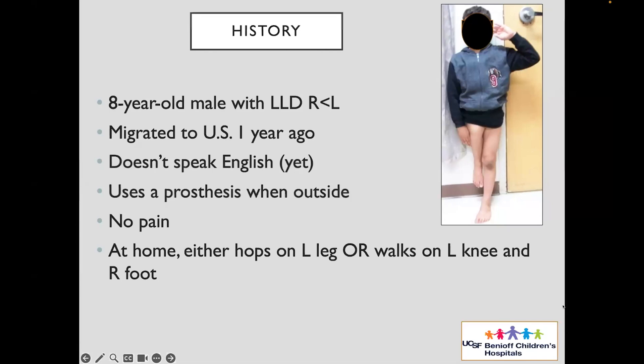I've had anecdotal experience where the graft takes — it's not the greatest, it's not sensate — but it's better than what would happen in an adult. So I think the question is: what about long-term outcomes if you have a skin graft on an amputation stump?